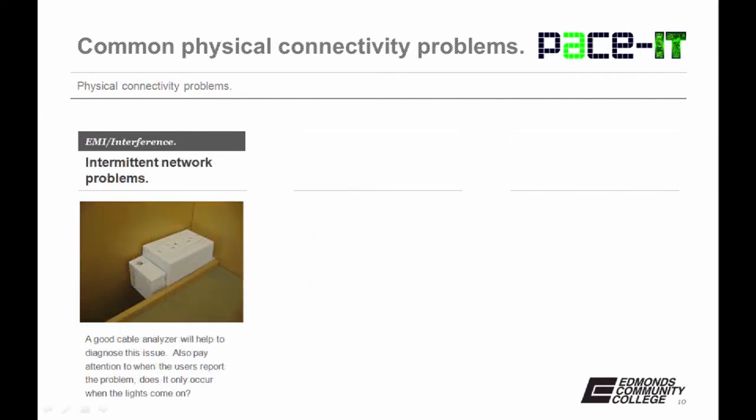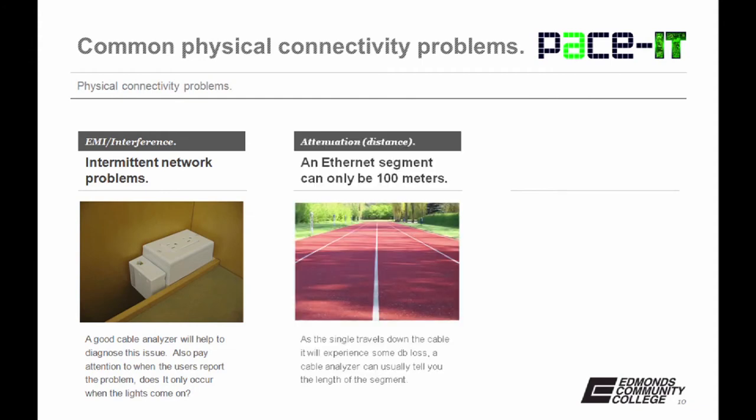Now let's talk about electromagnetic interference or just interference. EMI tends to produce intermittent network problems. A good cable analyzer will help to diagnose this issue. Also, pay attention to when the end user is reporting the problem. Does it only occur when the lights come on? If that's the case, then it's probably a combination of EMI and poor cable placement.